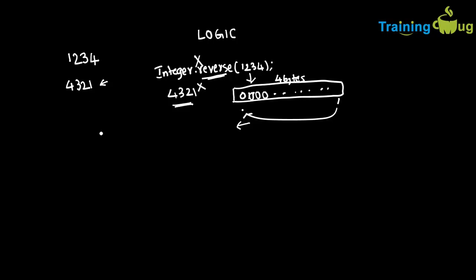Now, how are you going to get the actual reverse if you don't use a built-in function? We have to write our own function which can calculate the reverse of a number. Let us understand what the logic is.